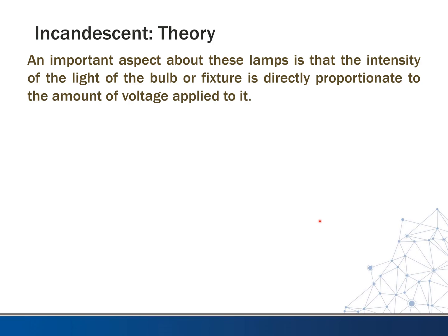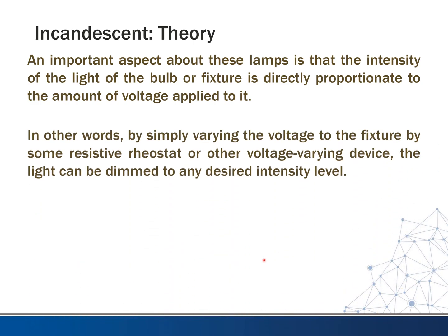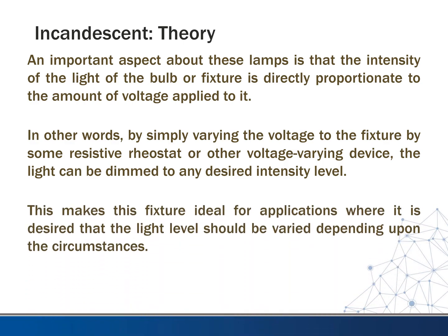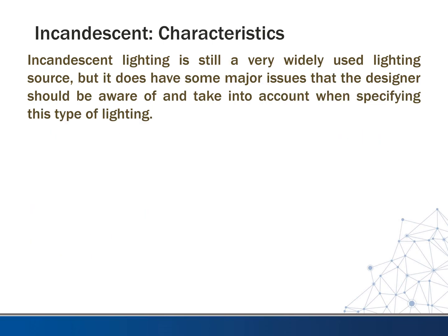An important aspect about these lamps is that the intensity of the light is directly proportionate to the amount of voltage applied to it. By simply varying the voltage to the fixture using a resistive rheostat or other voltage-varying device, the light can be dimmed to any desired intensity level. This makes this fixture ideal for applications where the light level should be varied depending on the circumstances. Incandescent lighting is still a very widely used source, but it has some major issues that the designer should be aware of.